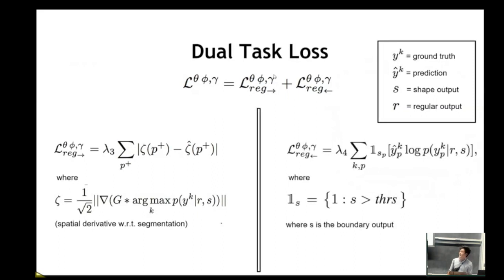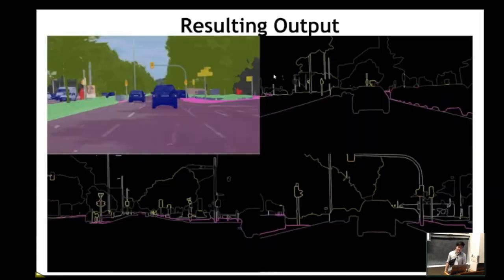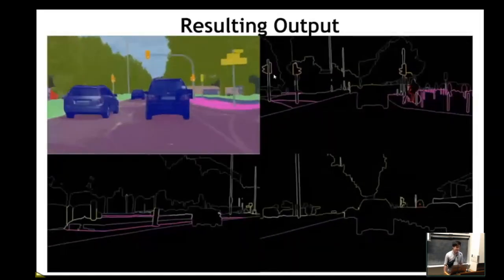And for our second dual-task loss term consists of taking the standard cross-entropy loss term on segmentation and adding more weighting on the pixels where we have a high boundary confidence. We basically just do this by using a simple indicator function which thresholds our boundary output. And these loss terms help to produce our final outputs here.